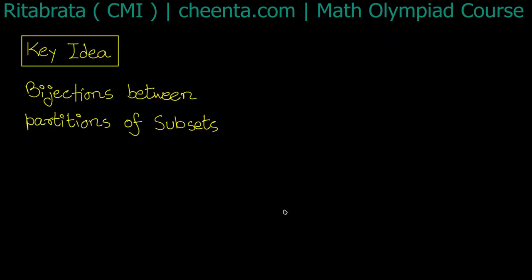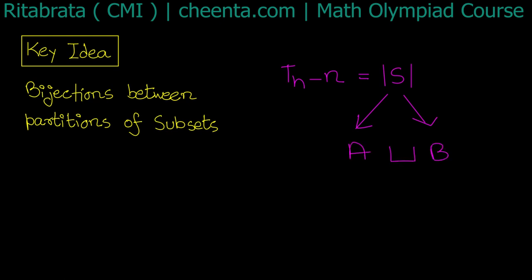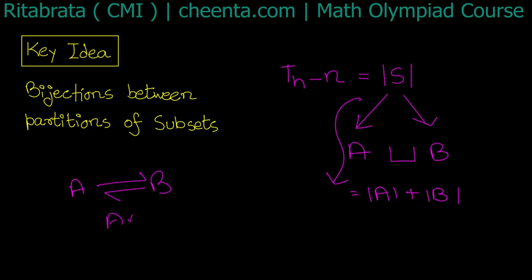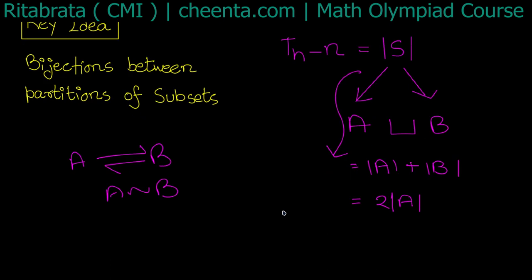My key idea is to show that T(n) minus n is the size of some set S. I will partition S into two parts, A and B. So T(n) minus n equals size of A plus size of B. Then I will show that A and B are in bijection, so T(n) minus n becomes two times size of A, which is even.